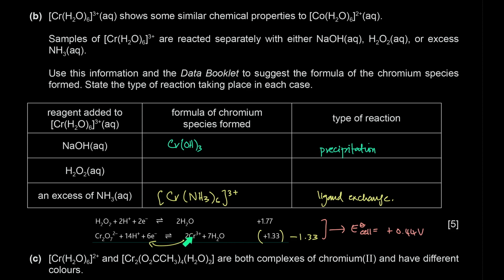The formula of the species formed is Cr2O7 2−. This type of reaction is a redox reaction — specifically, chromium is being oxidized whereas hydrogen peroxide is being reduced.